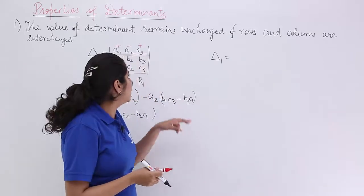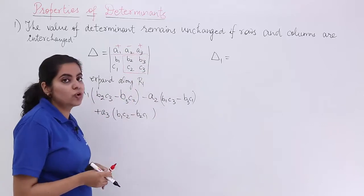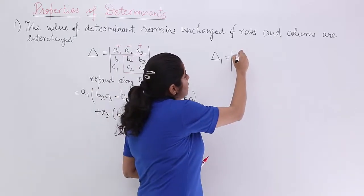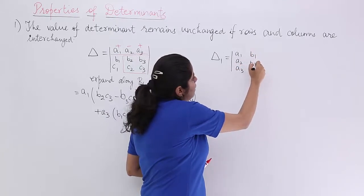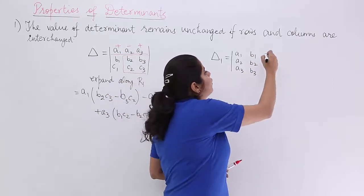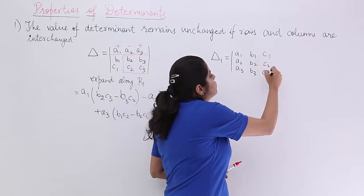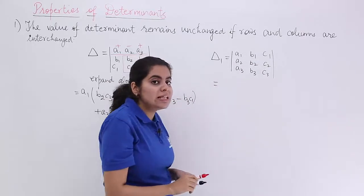That means I have a1, a2, a3 not as the first row here but as the first column. So, it is a1, a2, a3, b1, b2, b3. See the change that things which were earlier rows have become columns. Now, what to do? Let's evaluate.